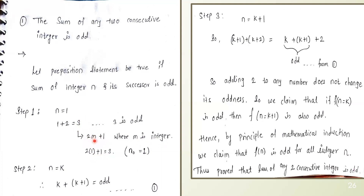So m can be any integer value. Moving to step number 2, which is the induction hypothesis. We assume the given statement is true for n equal to k. We assume that k is a given integer and k plus 1 is the consecutive integer, so k plus (k plus 1) is odd. This is our equation 1.